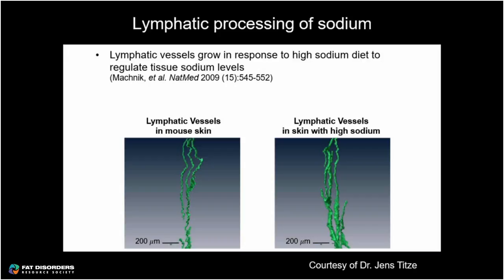These vessels were isolated from the skin where sodium had accumulated in the tissue. You can notice that the vessels themselves are enlarged and dilated, with a few more branches than you can see from the normal lymphatic vessels in mice.